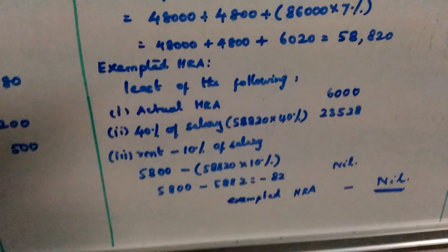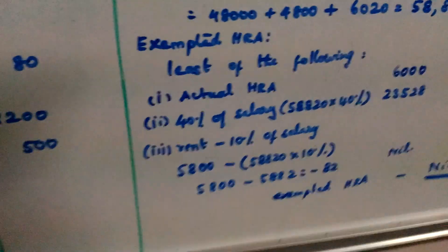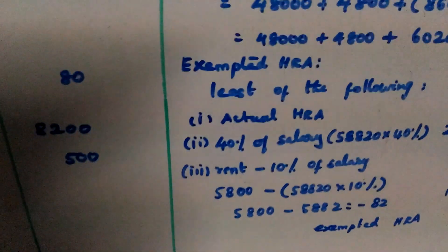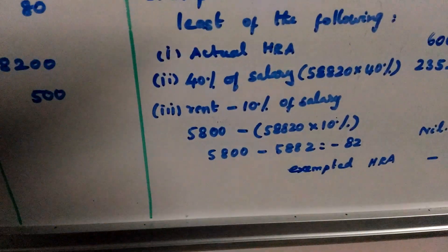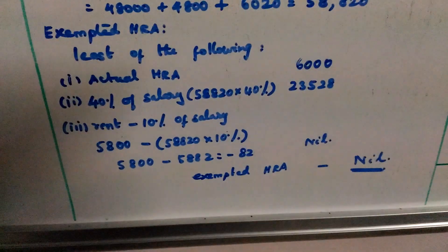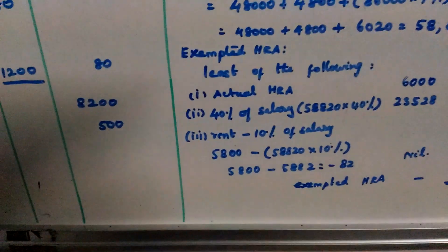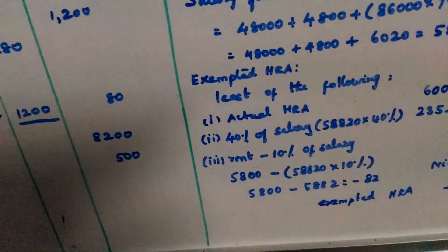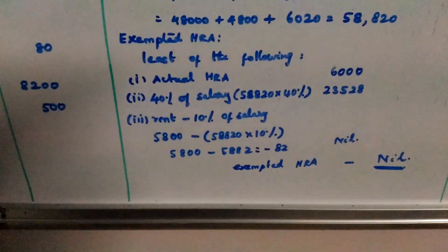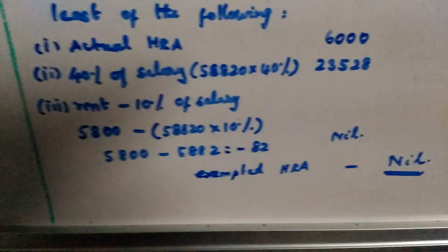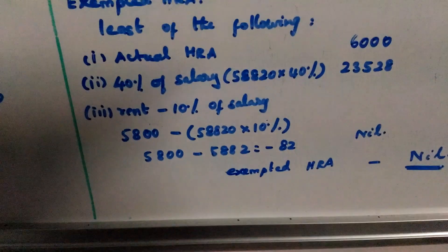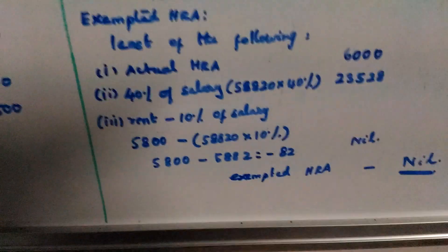Salary for HRA purpose and exempted HRA: taxable HRA is actual HRA less the list of the following exemptions. Exempted HRA is the least of: actual HRA; 50% of salary for Chennai/Mumbai/Kolkata/Delhi (or 40% for others); and rent paid minus 10% of salary. For rent of $5,800, minus 10% of salary ($5,800), the result is $82 or zero, so we subtract $82.